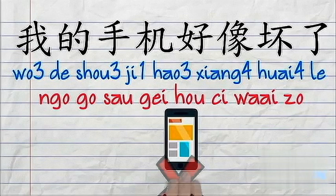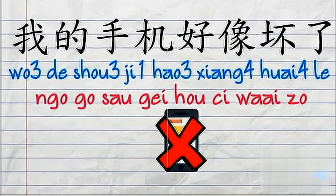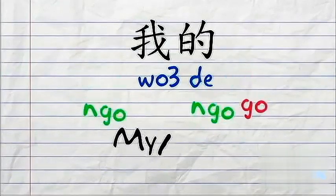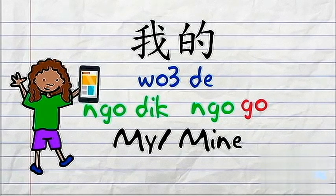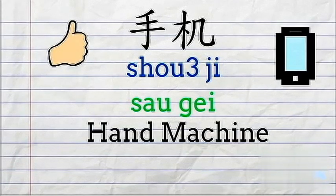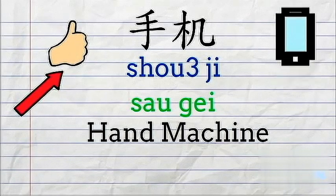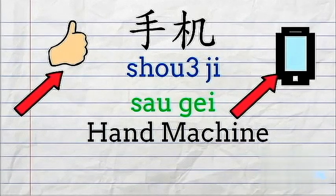我的手机好像坏了. 我的 means 'mine'. 我的手机 — 手机 means cell phone, which literally means 'hand and machine'. 手 is 'hand', 机 is 'machine'.